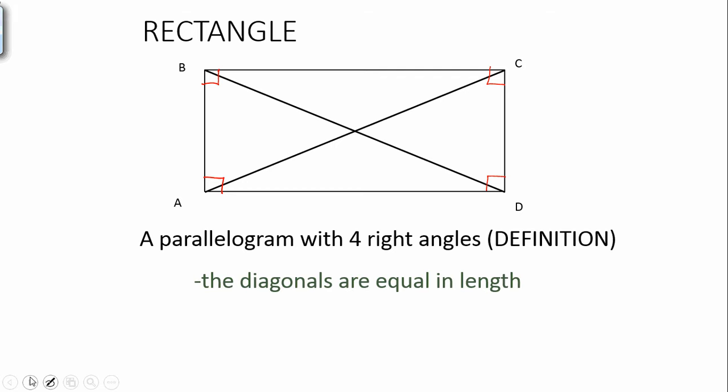We have diagonals that will be equal in length. So that means from B to D in this picture and A to C in this picture will be congruent. So BD is congruent to AC, and that is a property that rectangles will have because they're a little bit more special than just generic parallelograms.